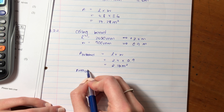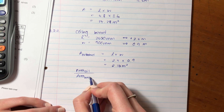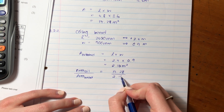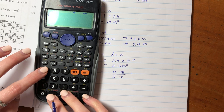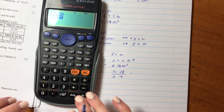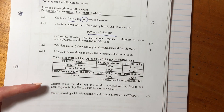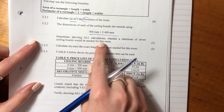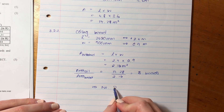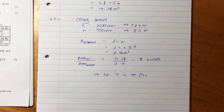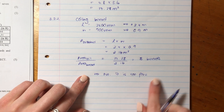Now let's figure out how many ceiling boards are needed for the full ceiling area. Area of ceiling divided by area of one board: 17.28 divided by 2.16 equals 8. So we need 8 boards. The question asked whether a minimum of 7 would be needed — the answer is no, 7 is too few. Remember with these questions: once you do the math, comment on the scenario. You get a mark for that commentary.